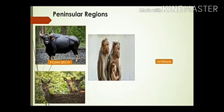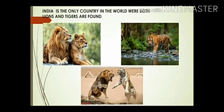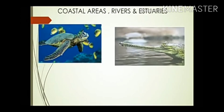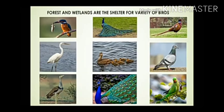Snow leopard and yak are found in the snow-capped regions of the Himalayas. In peninsular regions we find the Great Indian bison, deer, monkey, antelope, and snake. India is the only country in the world where both lions and tigers are found — Gir Forest in Gujarat is home to the Asiatic lion, and tigers, our national animal, are found in various parts of the country.